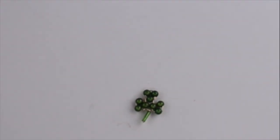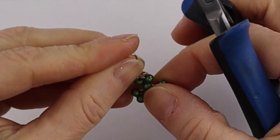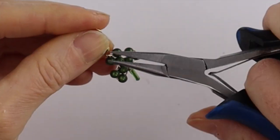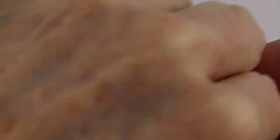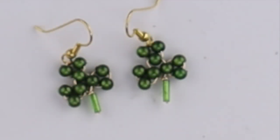Then you can add some earring hooks. We'll just take the earring hook and loop it onto the top, close it up. And there you have your super cute little shamrock earrings.